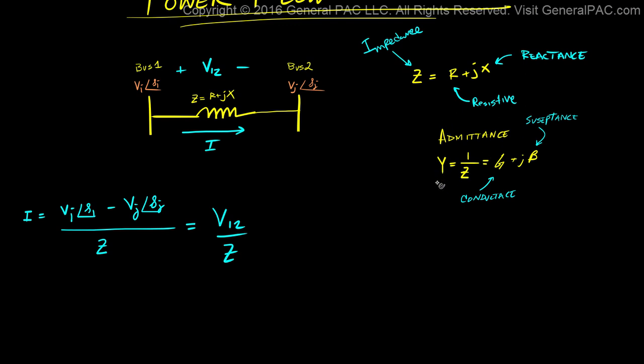We said the admittance was y is equal to 1 over z. So if y is equal to 1 over z, then what if we just took y, the admittance of this transmission line, and then we just multiply that by v1,2. That still makes sense. Because all we're doing is instead of calling this impedance, we're going to call it admittance. And look, our equation is so much more simpler.